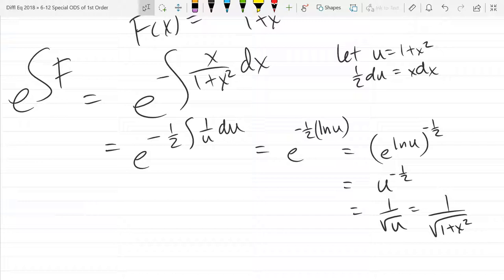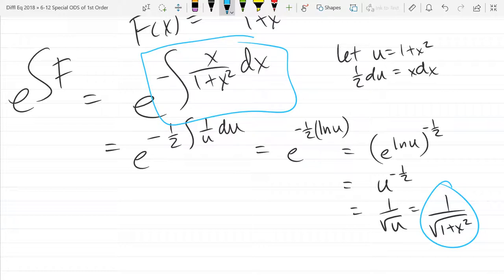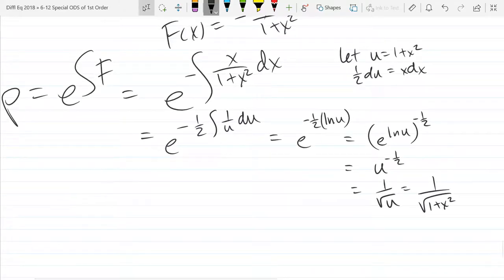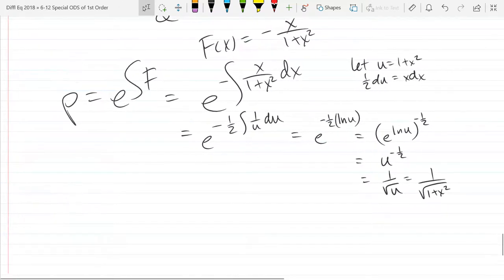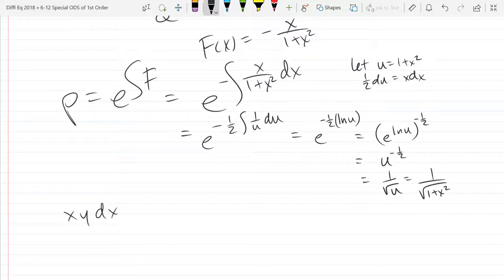All right questions on that integrating factor computation. Now you want to be a little careful. I just tried to check mentally really quickly and I was like, all right what's the derivative of this what I just circled. It's not this right here because it's e to that thing. So if you want to check, it's not quite the antiderivative what you started with because it's e to that antiderivative, so just be a little careful when you're checking. Okay so we multiply by that and we should have exact. So we're going to take our ODE x y dx plus one plus x squared dy equals zero. We're going to multiply by rho which is one over square root one plus x squared.